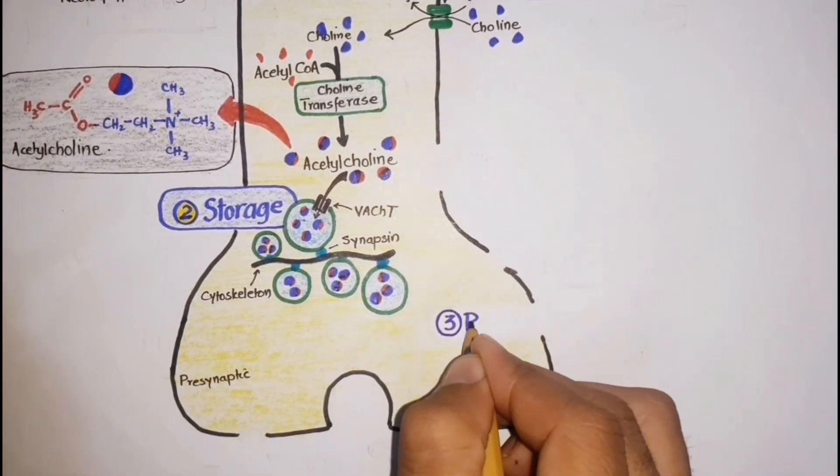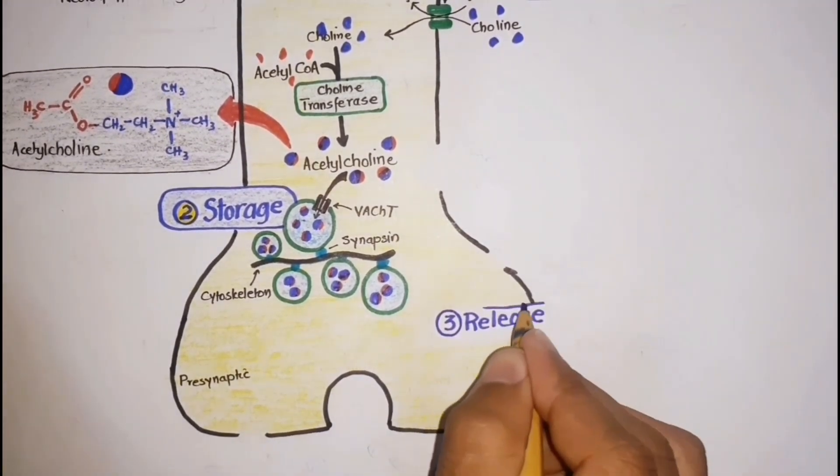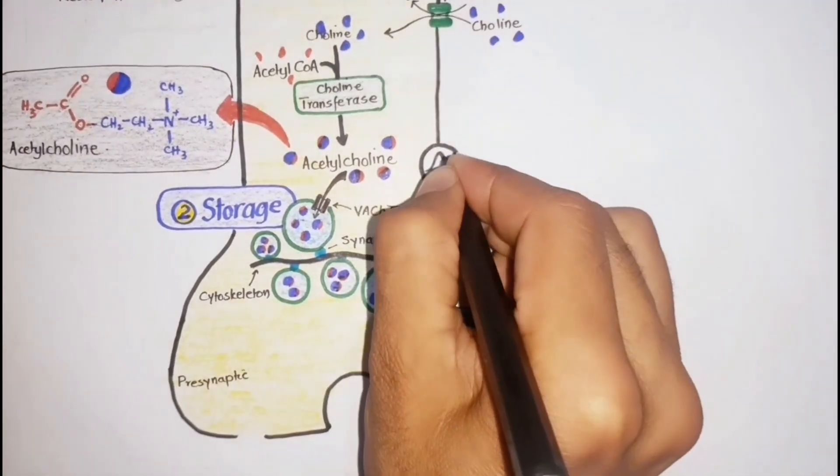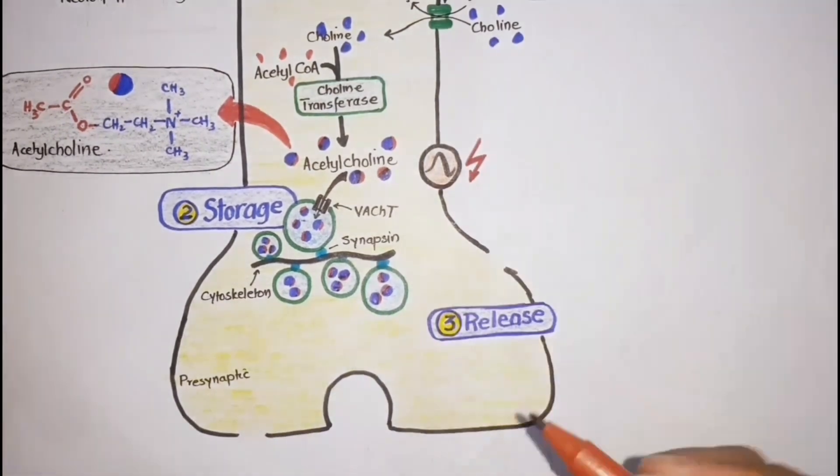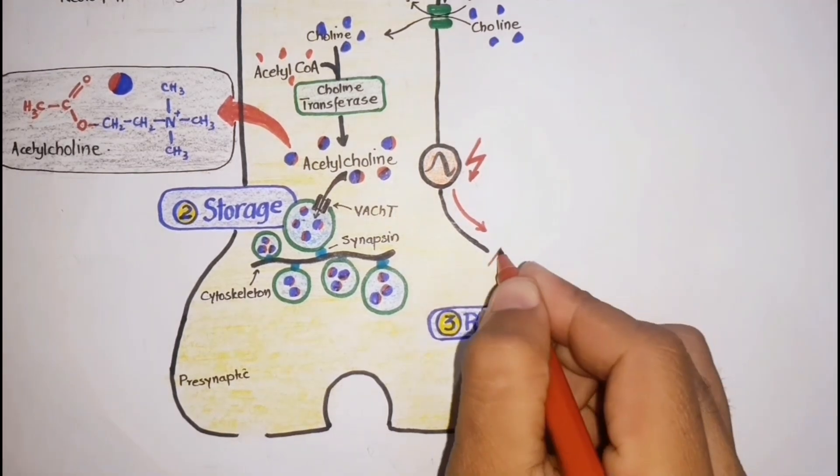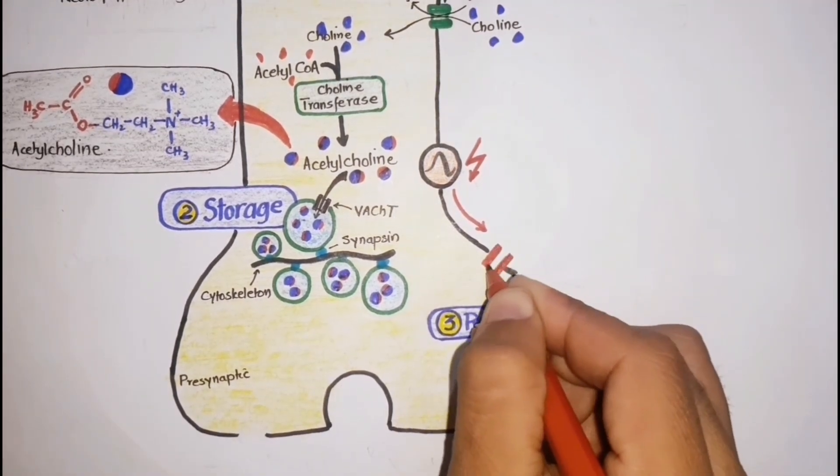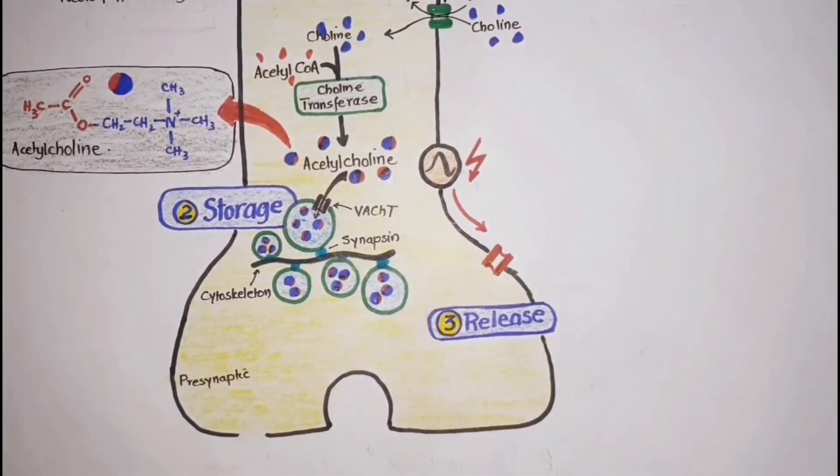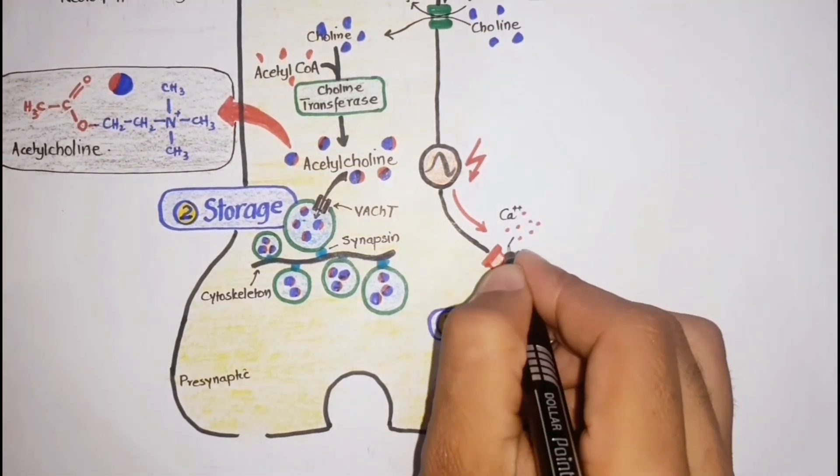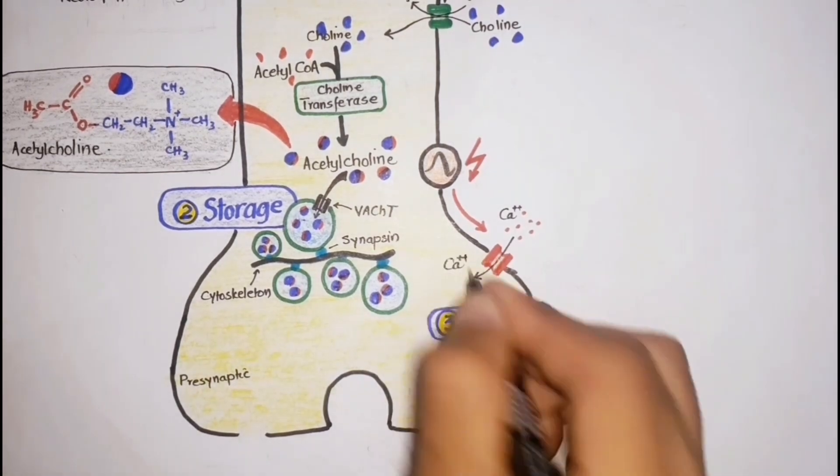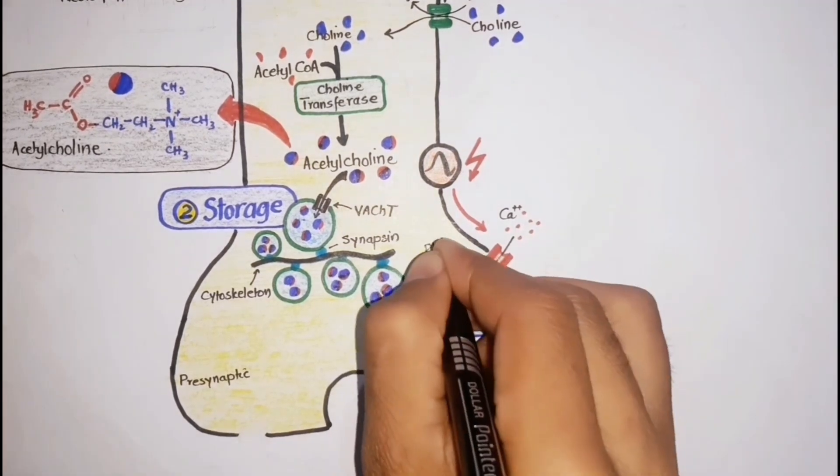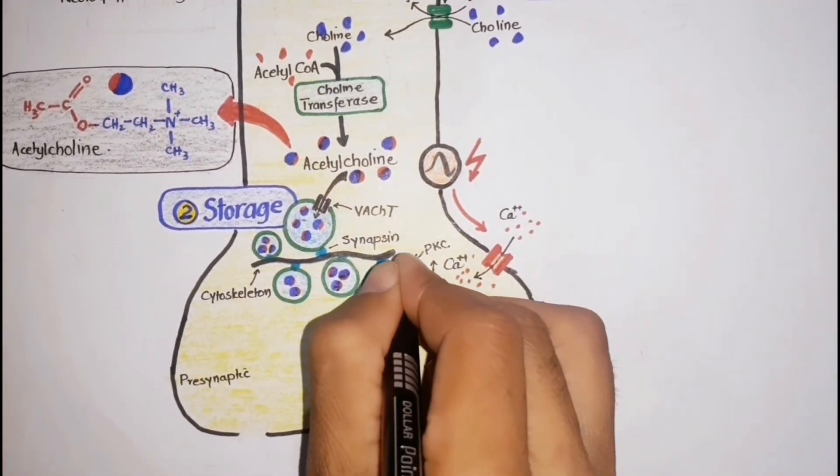The third step is the release of acetylcholine. The arrival of an action potential at the presynaptic neuroterminal triggers calcium influx into the axoplasm of the neuron by opening voltage-gated calcium channels, resulting in increased calcium levels that activate protein kinases which phosphorylate synapsin.